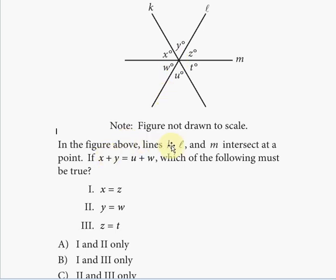It says lines k, l, and m intersect at a point. If x + y = u + w, which of the following must be true? So x, y, u, and w represent the variables that show the degree value, the angles.